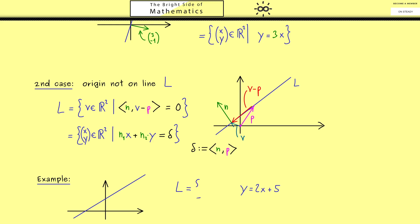Now of course as before we should write this as a set L again. So L is equal to the set of all points x and y with this property here. And now you should see this here can be written in the same form as before. So for example just bring 2x to the other side. So we have minus 2x plus y is equal to 5. Which then means n1 is minus 2, n2 is 1 and our delta is 5.